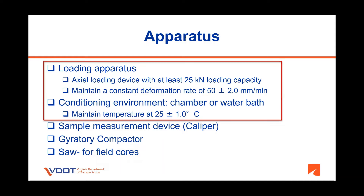This slide shows the apparatus needed to perform this test as indicated in ASTM D8225. Please check this standard for further details on testing apparatus requirements, especially for the loading device and its accessories, as well as the conditioning chamber or water bath. For example, the loading device shall have a loading capacity of at least 25 kN and be able to apply and maintain a constant deformation rate of 50 ±2 mm per minute. The conditioning chamber or water bath shall maintain the target test temperature of 25 ±1 degrees Celsius for conditioning specimens before testing. Please also note that there are additional apparatus, such as ovens and pans, needed to prepare compacted specimens but not indicated in the standard.